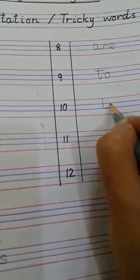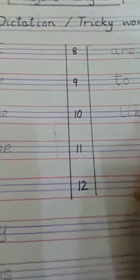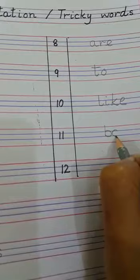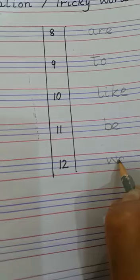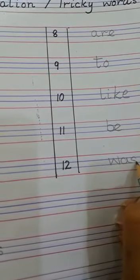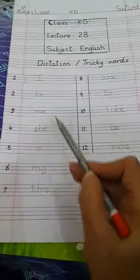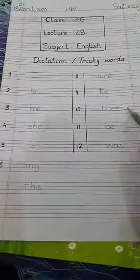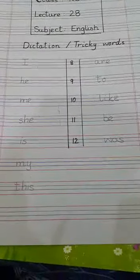Like: L-I-K-E, like. Be: B-E, be. Was: W-A-S, was. Let's review: I, he, me, she, is, my, this, are, to, like, be, was. Thank you.